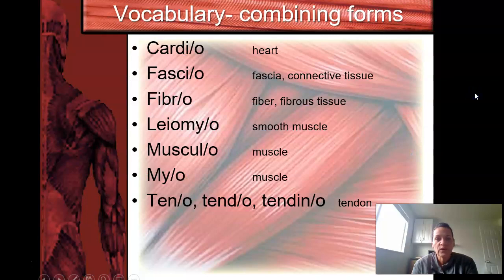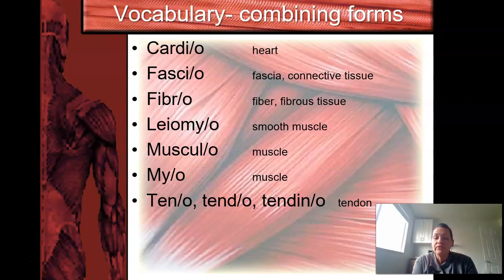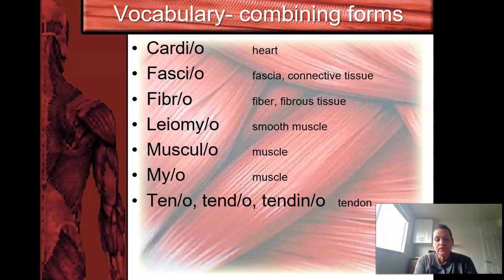Let's move on to vocabulary. In your worksheet, you will find these words and will need to fill them in. Anytime you see the word cardio, it refers to the heart. Fasci or fascio means connective tissue. Fiber or fibro means fibrous tissue. Leimo means smooth muscle. Musculo or muscule means muscle. Myo also means muscle. And tend, tendon, or teno refers to the tendons. You may stop this recording now and fill those in if you need to.